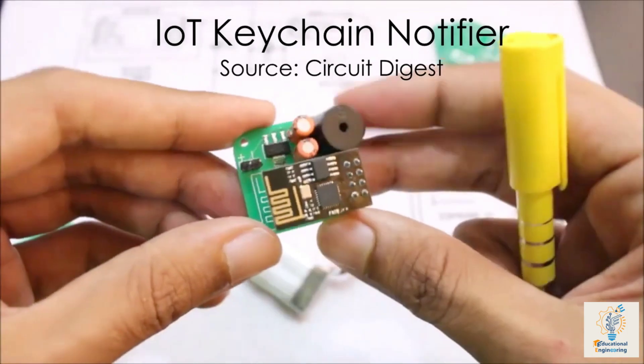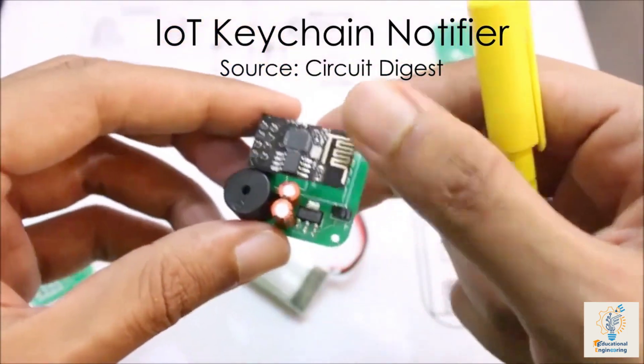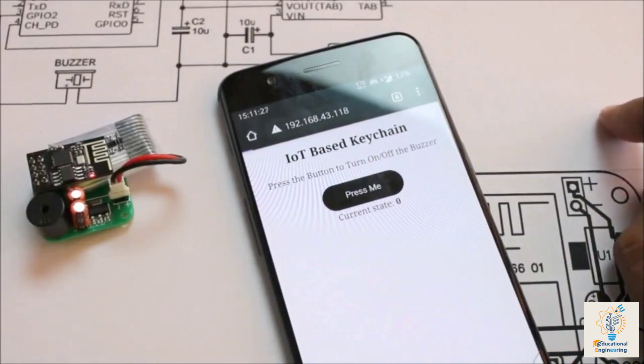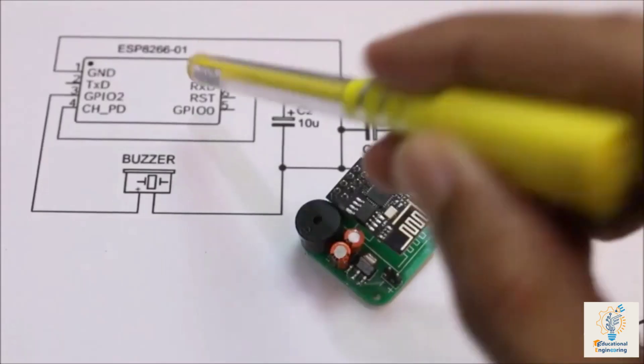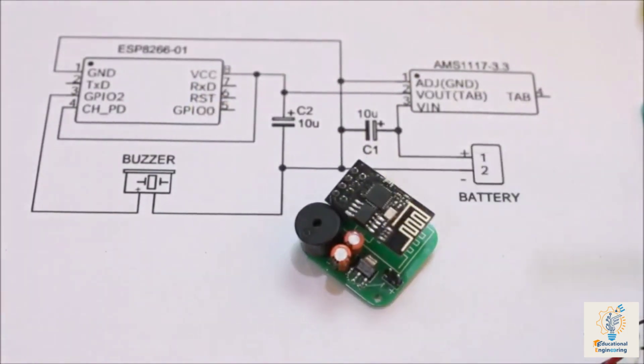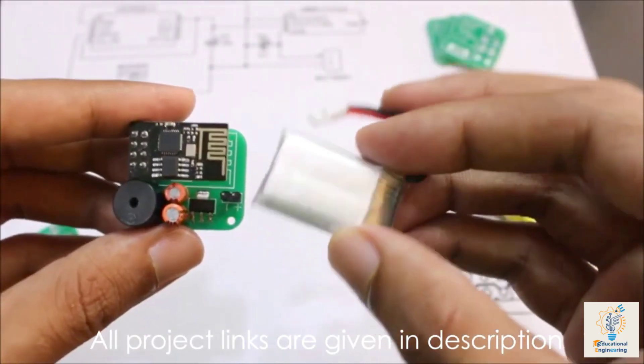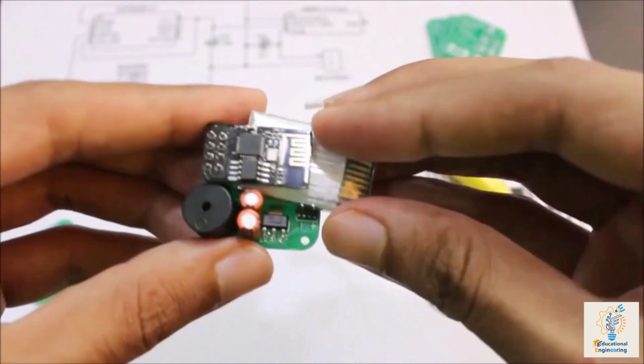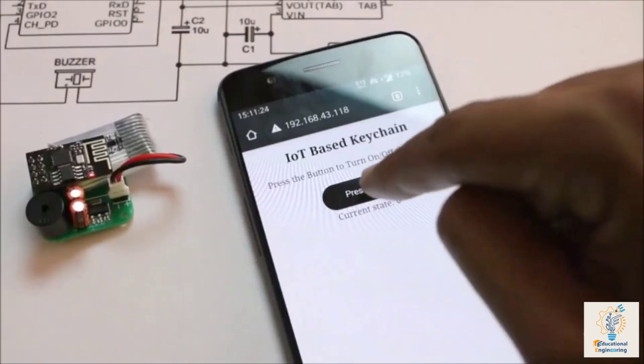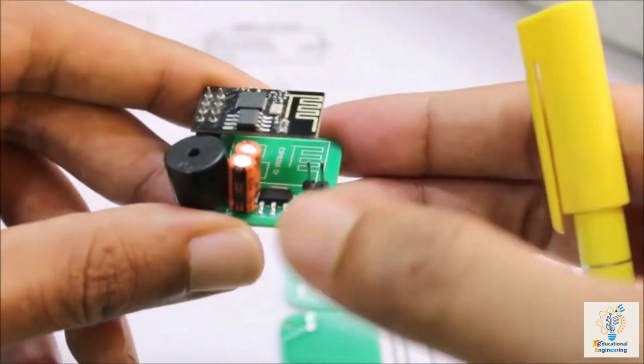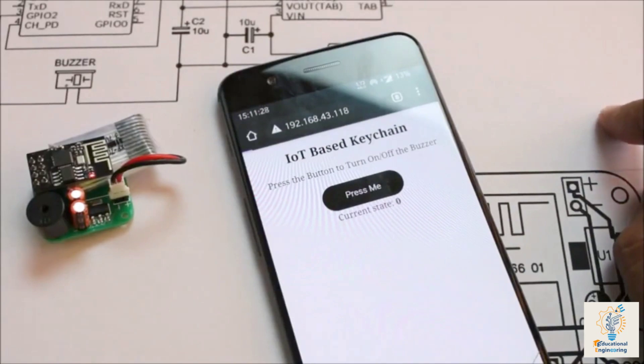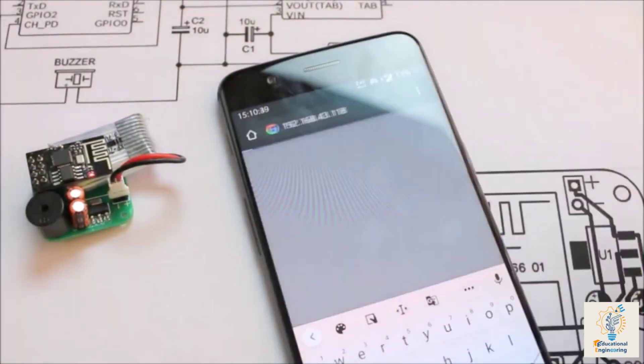Lose your keychains a lot? Well, with this project, you can find them in a matter of seconds with the sound of a ringing buzz. This project needs an ESP8266 to connect to your phone, a buzzer to alert you, and a battery for it to function. So, when a time comes, you lose your keys somewhere around your house, press the button on your phone, and the keychain finder immediately alerts you with a ring. It's a useful and practical project.